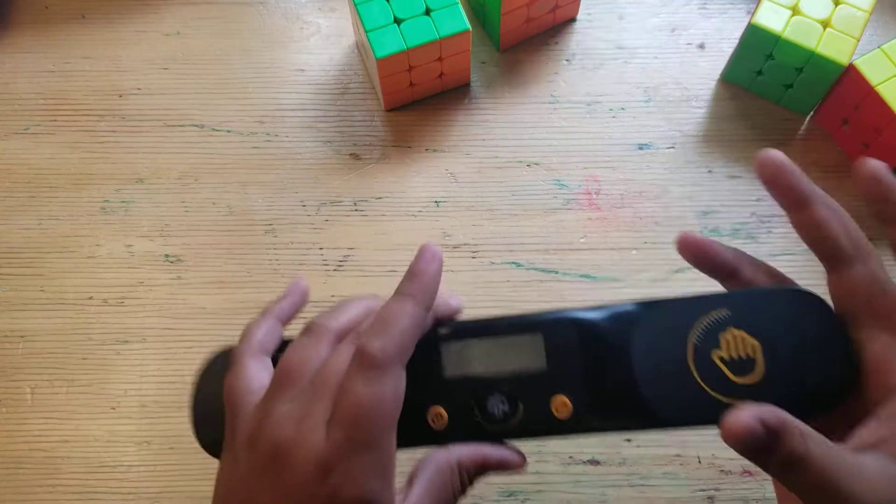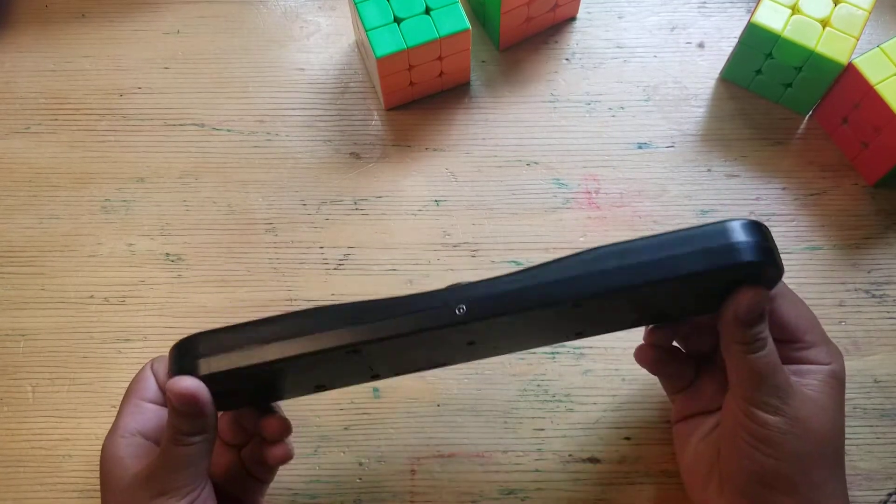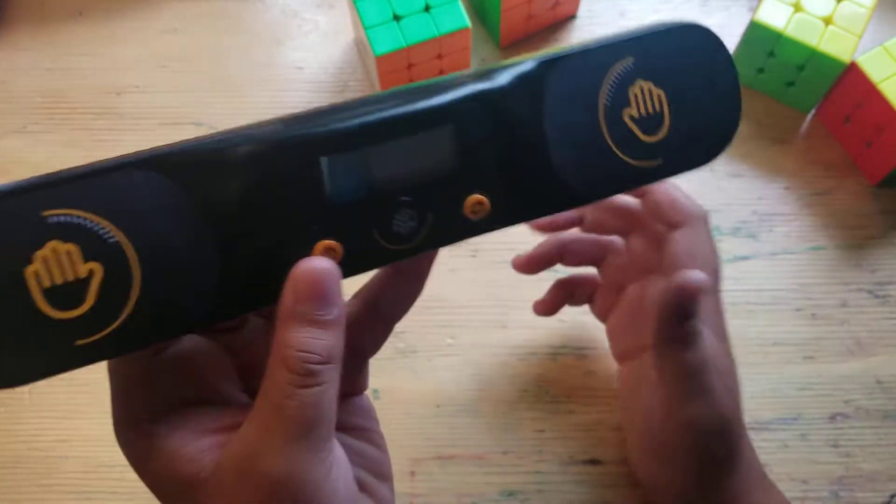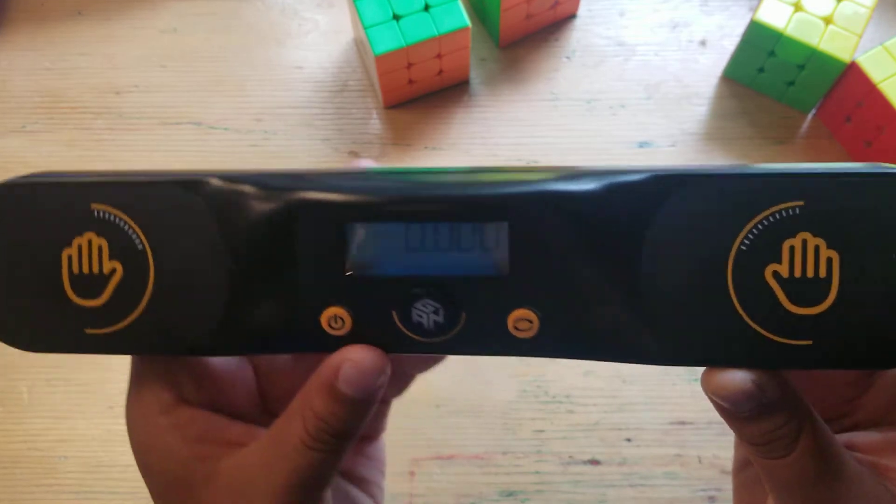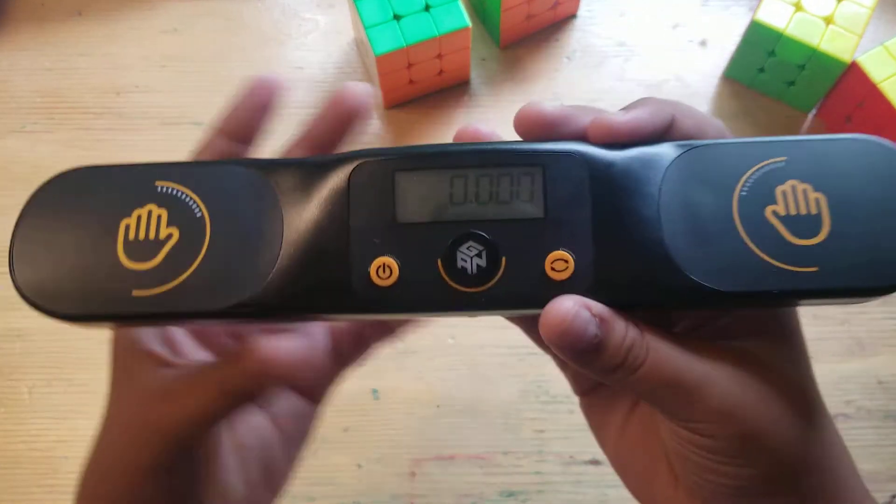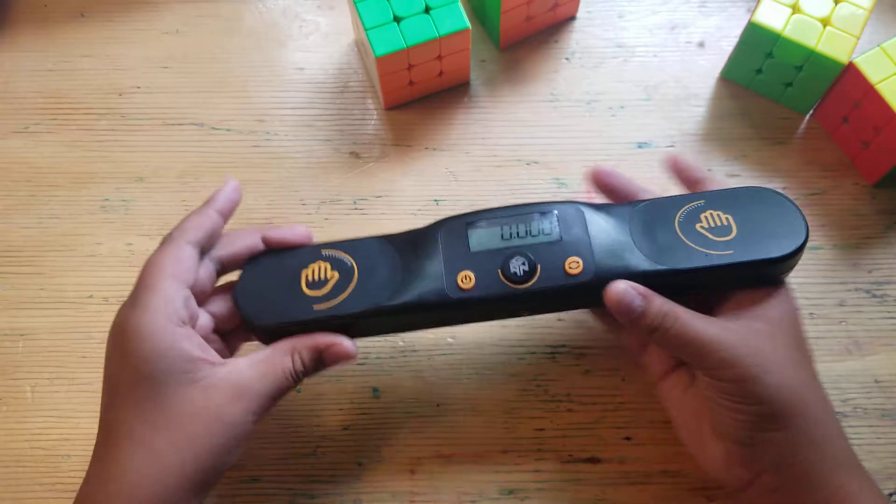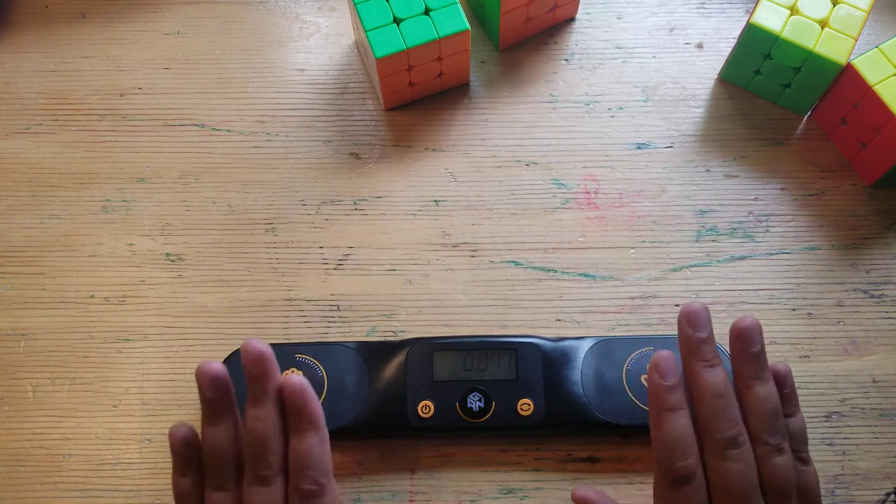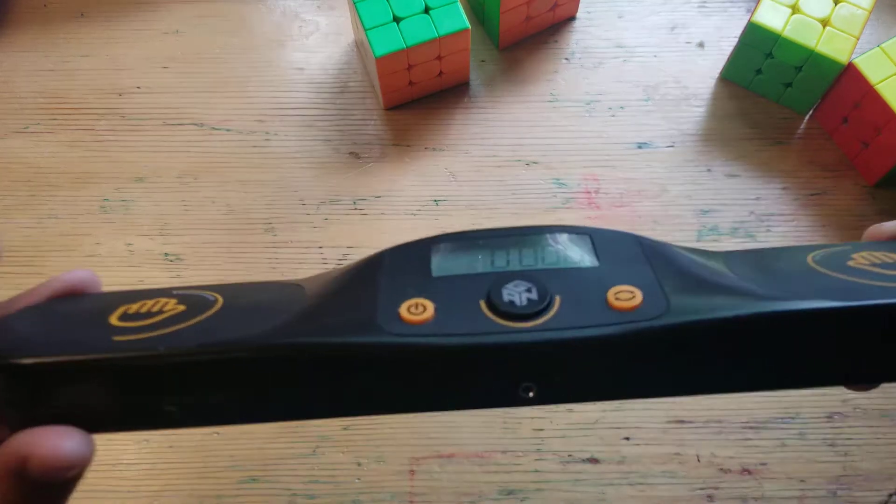So the Gan Smart Timer looks really cool and I really like the design of it. Let's turn it on. Gan actually installed batteries in mine, so good job Gan. Let's try it out. It's really cool, it actually lights up when you put your hands on it. Really, really cool.